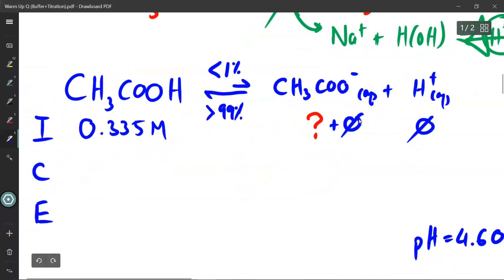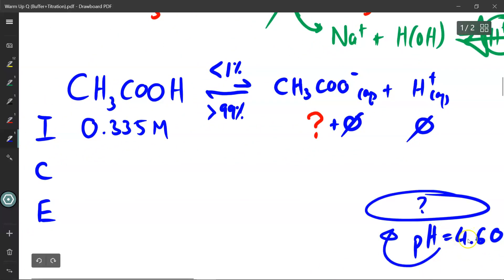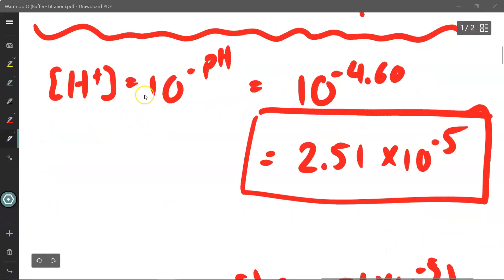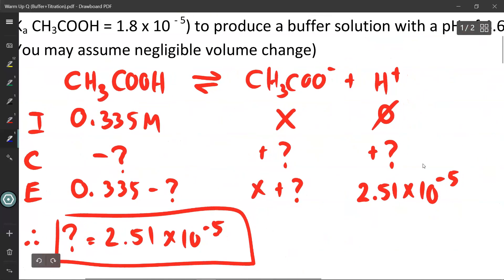Alright, so the first thing I'm going to do is find out what a pH of 4.60 would look like in terms of the hydronium concentration at equilibrium. So if you recall, the H plus concentration is 10 to the power of negative pH. Since the pH is 4.60, 10 to the power of negative 4.60 is 2.51 times 10 to the power of negative 5.